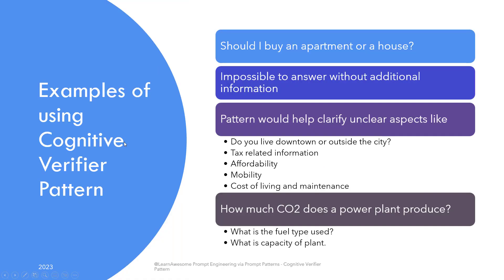A very simple example can be a question like, should I buy an apartment or a house, which by itself is difficult, if not impossible, to answer without additional information. The cognitive verifier pattern would help the model ask the user additional questions like: does he live in a city or town? Are there additional taxes on land ownership? Or whether maintenance cost is high or low in the area?